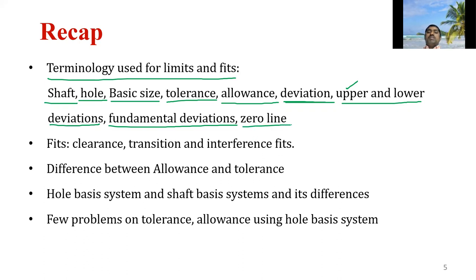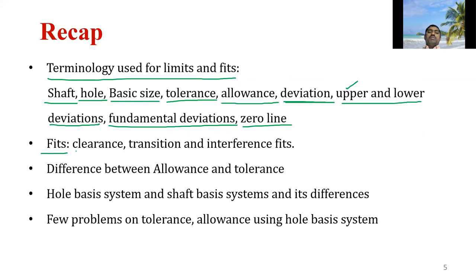Upper deviation is the algebraic difference between the maximum limit of size of a component and its basic size. Lower deviation is the algebraic difference between the minimum size of a component and its basic size. Fundamental deviation is the minimum difference between the size of the component and its basic size. The zero line represents the basic size of the component. Fit is the relationship that exists between two mating parts of an assembly — the hole and the shaft — with respect to their dimensional difference before assembly.